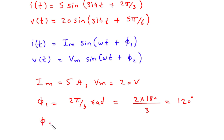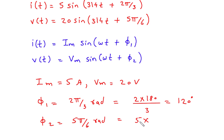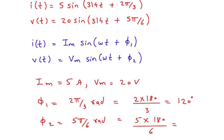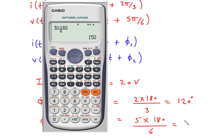Then φ2 is for voltage, and its value is 5π/6 radians. Converting to degrees: 5 × 180 / 6 = 150 degrees.